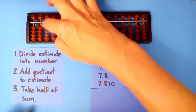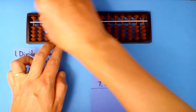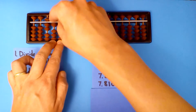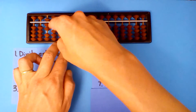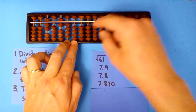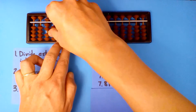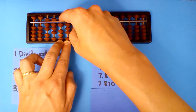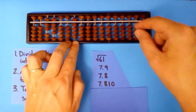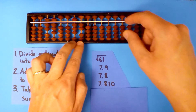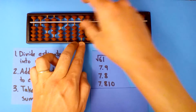Let's divide 7.81 into 61. 7.81 into 61, 7 times. 7 times 7 is 49. 7 times 8 is 56. 7 times 1 is 7. 7.81 into 63, 8 times. 8 times 7 is 56. 8 times 8 is 64. 8 times 1 is 8. 7 into 8, once. 1 times 7, 1 times 8, 1 times 1.